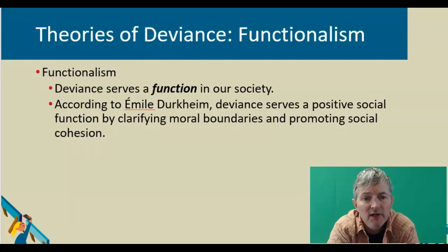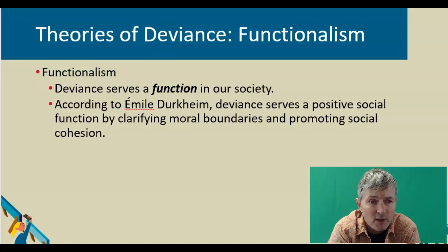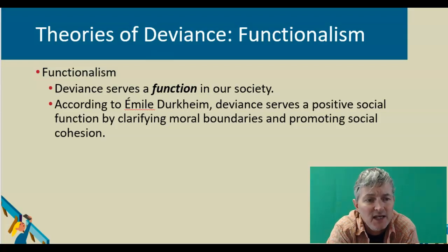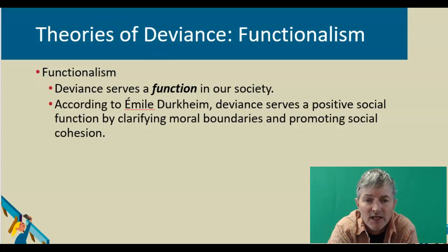Some theories of deviance. Of course, we start with functionalism. For the functionalists, deviance serves a function in our society. According to Emile Durkheim, deviance serves a positive social function by clarifying moral boundaries and promoting social cohesion. Without seeing deviant behavior, we would have a hard time classifying what is normal. It isn't until our group norms are challenged that we come together as a group to defend those norms.